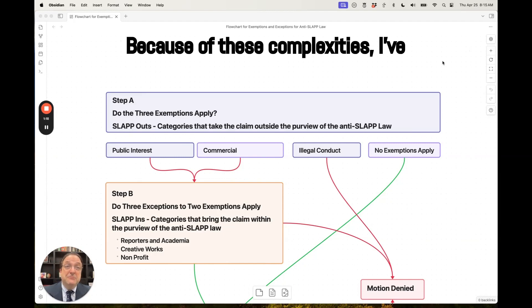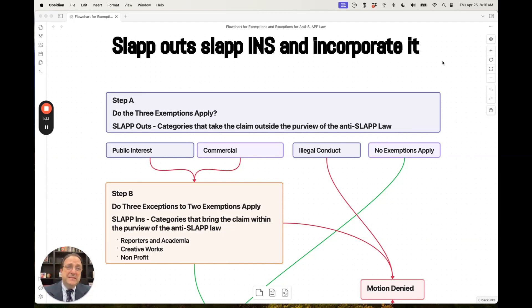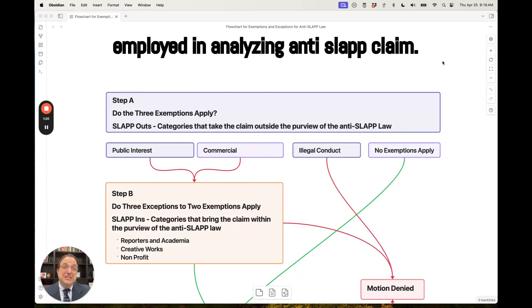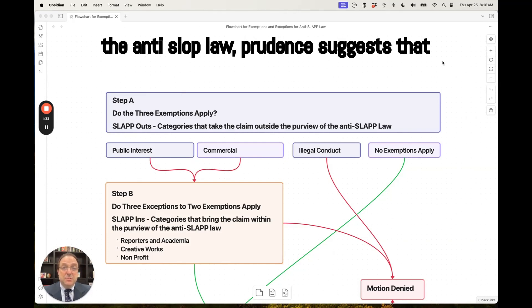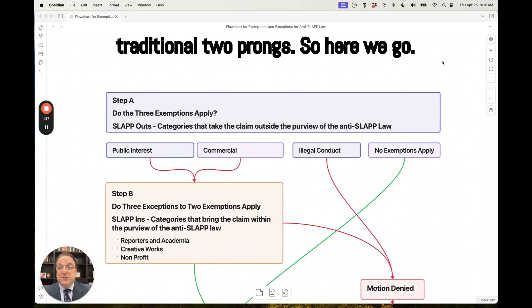Because of these complexities, I've created a flow chart to help me analyze SLAPP outs, SLAPP ins, and incorporate it within the two-prong structure typically employed in analyzing an anti-SLAPP claim. If you're in the position as a judge or a lawyer of analyzing the application of the anti-SLAPP law, prudence suggests that you apply four steps, not just the traditional two prongs. So here we go.